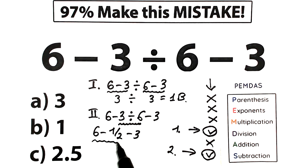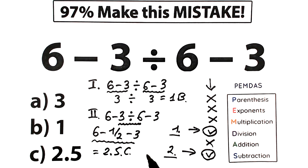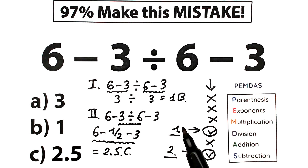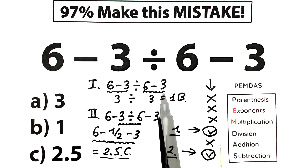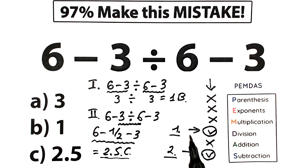Now we complete the subtraction step. We have 6 minus 3 equal to 3, and 3 minus 1/2 — which is 0.5 — equals 2.5. As you can see, this is option C. The first approach was absolutely wrong because we solved it randomly, subtracting first and then dividing, which is a really big mistake in math.